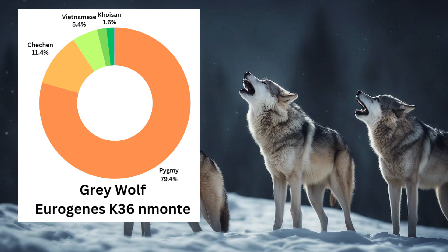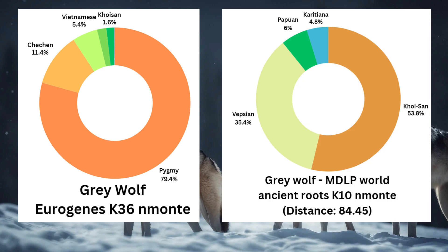It would be interesting to run this sample through a calculator that has non-human anchor populations as well, such as MDLP World Ancient Roots K-10. According to MDLP World Ancient Roots K-10 and Monty Oracle, this wolf is most closely approximated as a mixture of Hoi-san with Vepsians. Vepsians are a Fino-Ugric group in Northern Russia, whereas Hoi-san are a Sub-Saharan African group in South Africa. However, I have to note that the distance is extremely high, showing that although the calculator itself is well adapted for non-human cases, the oracle isn't.